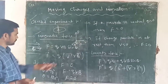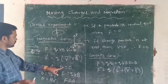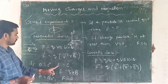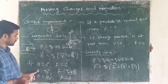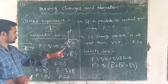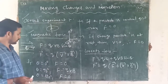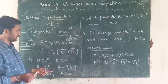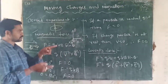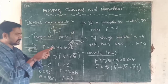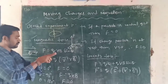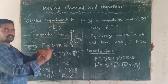If θ = 0°, force will be zero because sin 0° = 0, therefore F = 0. If θ = 90°, sin 90° = 1, so F = QVB — maximum force. If θ = 180°, force is again zero. When the charged particle and the magnetic field direction are in the same direction, force is zero; opposite direction, force is also zero.